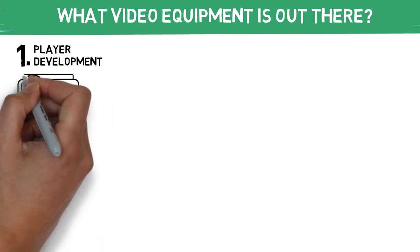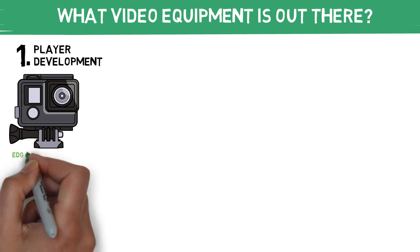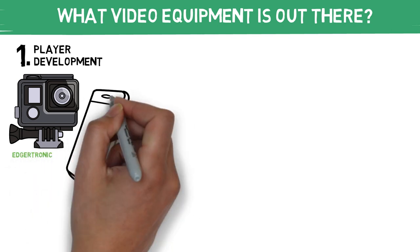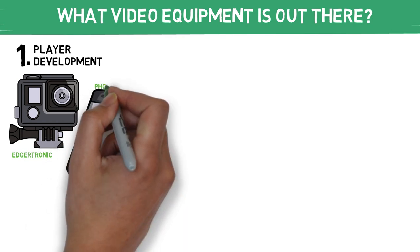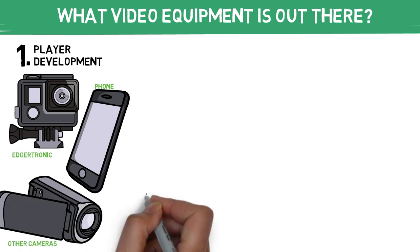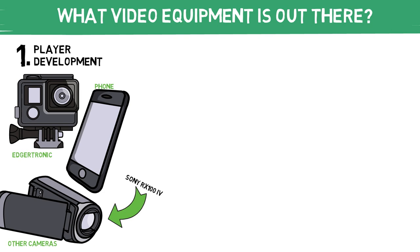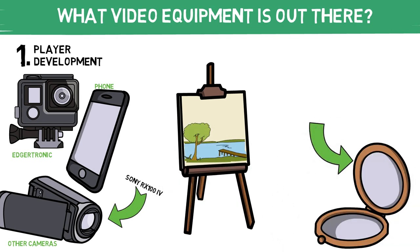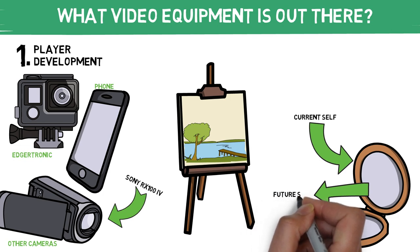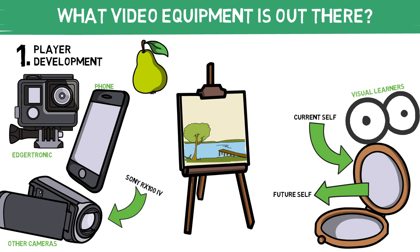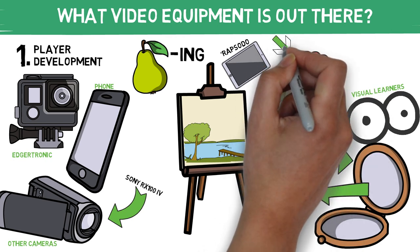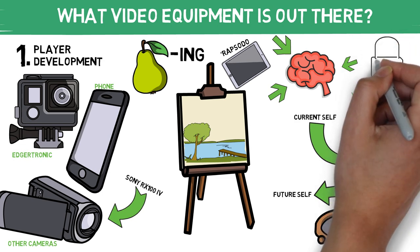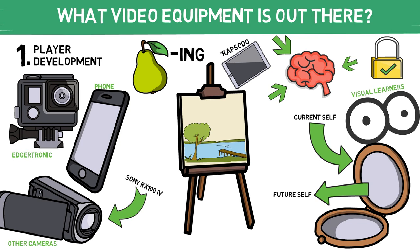First, we'll focus on player development. This could mean utilizing an Edgertronic camera — Rapsodo now has a new high-speed camera out as well — but it doesn't have to be new and fancy. You can get a lot of similar work done by utilizing your phone, or a more budget-friendly option such as the Sony RX100 Mark IV. You can really think of utilizing video in this way as a mirror: you paint a picture of your current self and work toward what you'd like to see in your future self. Another benefit is that some guys are visual learners, so pairing video with other technology like Rapsodo lets us attack each guy's brain from different angles to achieve our desired result. Because at the end of the day, everyone learns differently, and it's our job as coaches to figure out what works best for our guys — not necessarily what has worked best for us in the past.